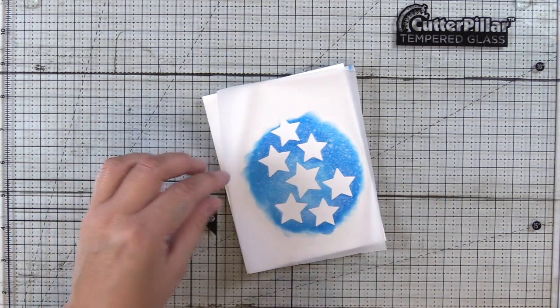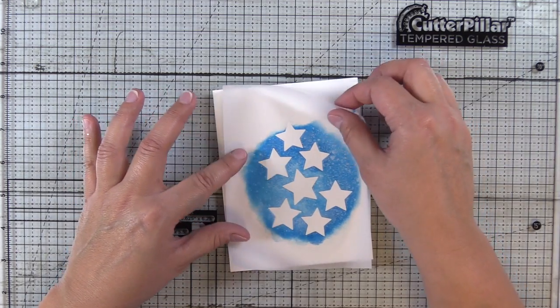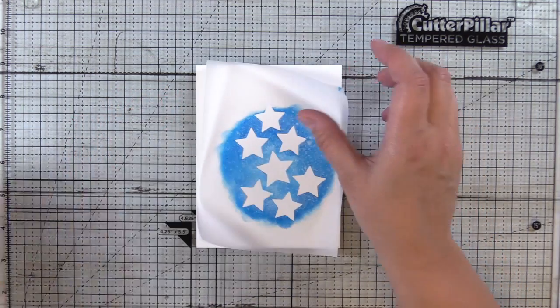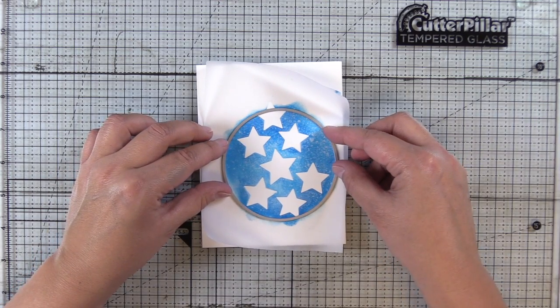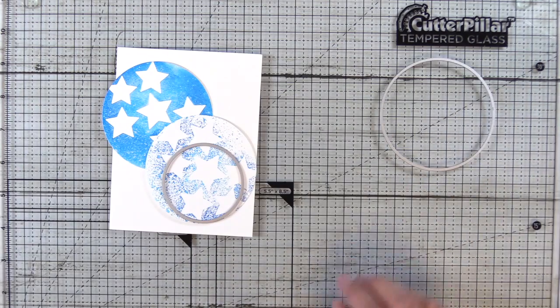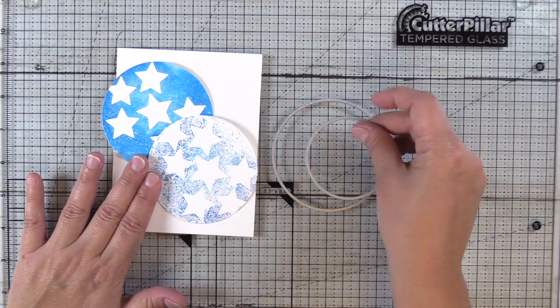We've got that all adhered down and then what we'll do is we'll take circle stacking dies and just go ahead and die cut these two elements. This is why you wanted to ink a little bit past your stamp so that you have a little wiggle room when you go to die cut.